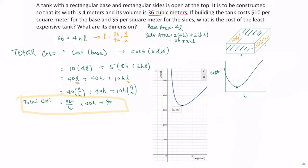Let me write it down. The total cost is the lowest, which is $330, when the height of the box is 3 meters.